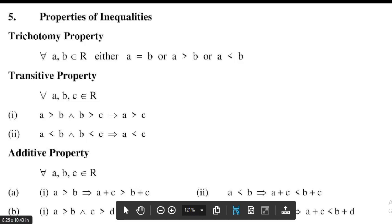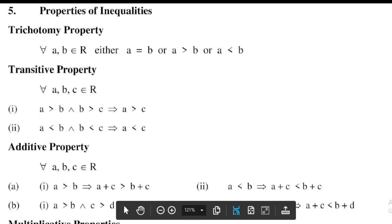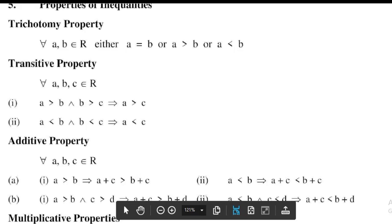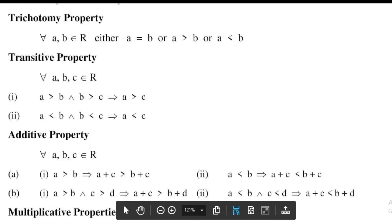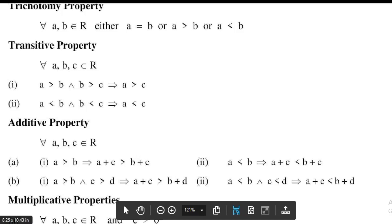Third, the additive property: for all a, b, c belonging to real numbers — first, a greater than b implies that a plus c is greater than b plus c; second, a less than b implies that a plus c is less than b plus c.